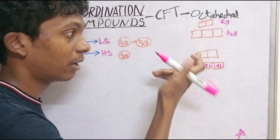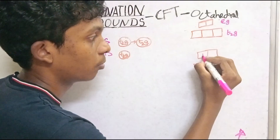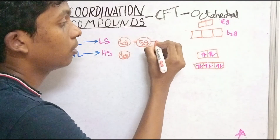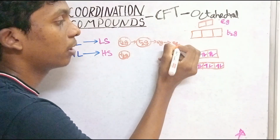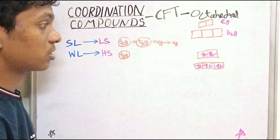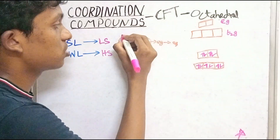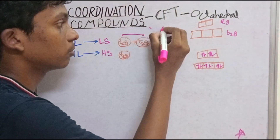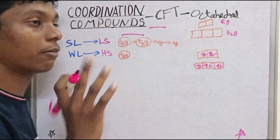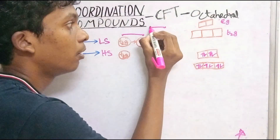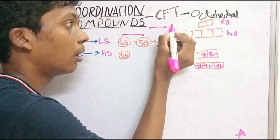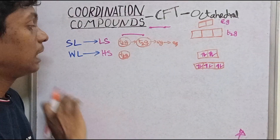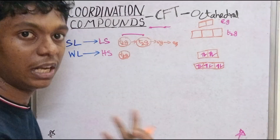There is no other way — we have to fill it. Then comes eg. First we go down into T2G. If we go down, it means this is a strong ligand. If we go up to eg first, there is a change — that indicates a weak ligand. Strong ligand fills T2G first; weak ligand goes to eg sooner.